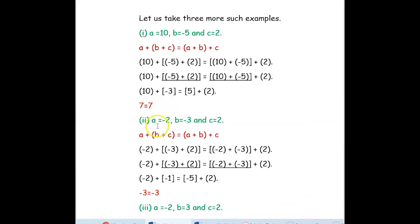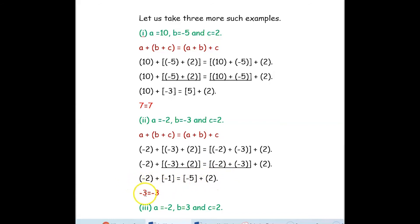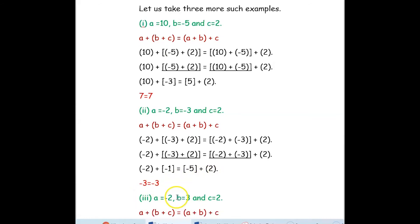Next example: a = negative 2, b = negative 3, c = 2. Substituting into the associative property: left side — negative 3 plus 2 equals negative 1. Right side — negative 2 plus negative 3 equals negative 5. So the equation is negative 2 plus negative 1 equal to negative 5 plus 2, giving negative 3 on both sides. Both sides are equal.